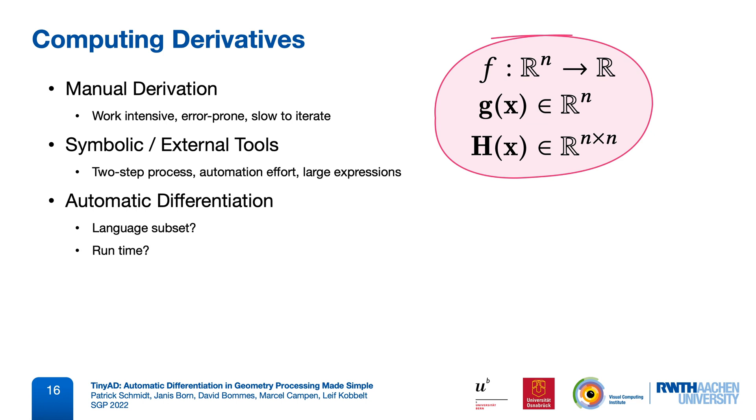We have to consider runtime performance. Not all libraries offer second-order derivatives, which we often need in our context. Direct support for mesh-based sparsity patterns is a rare feature. And a big deal-breaker are often control flow restrictions.